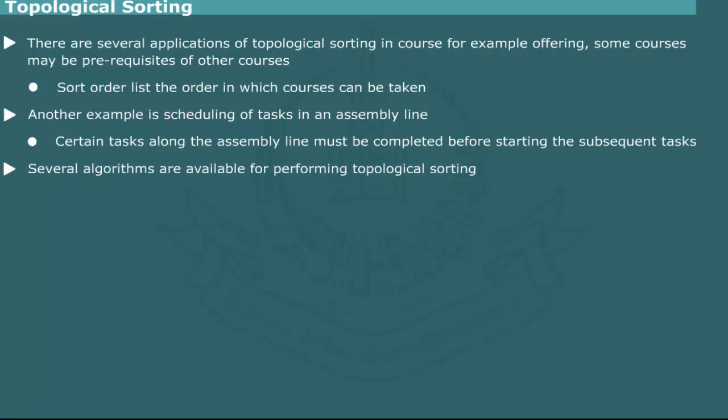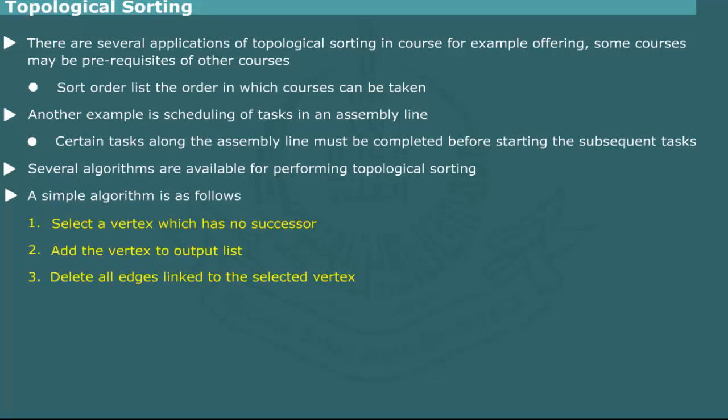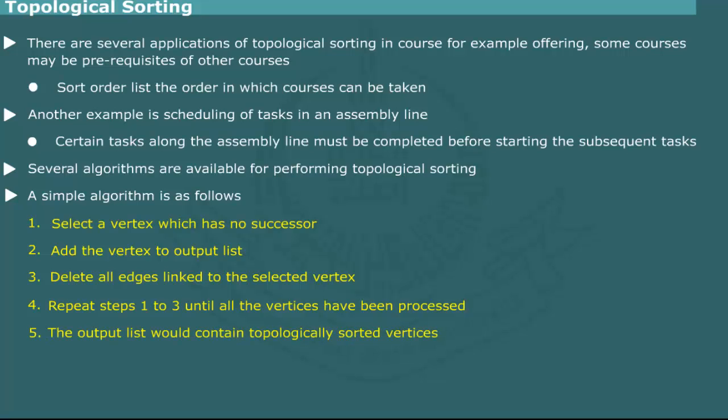There are several algorithms for performing topological sorting. In one simple method, a vertex which has no successor vertex is chosen. It is added to list and all edges that end at this vertex are deleted. This process is repeated on a next vertex that has no successor, until all the vertices have been added to the list. The result is a sequence of vertices which would be in topological sorted order.